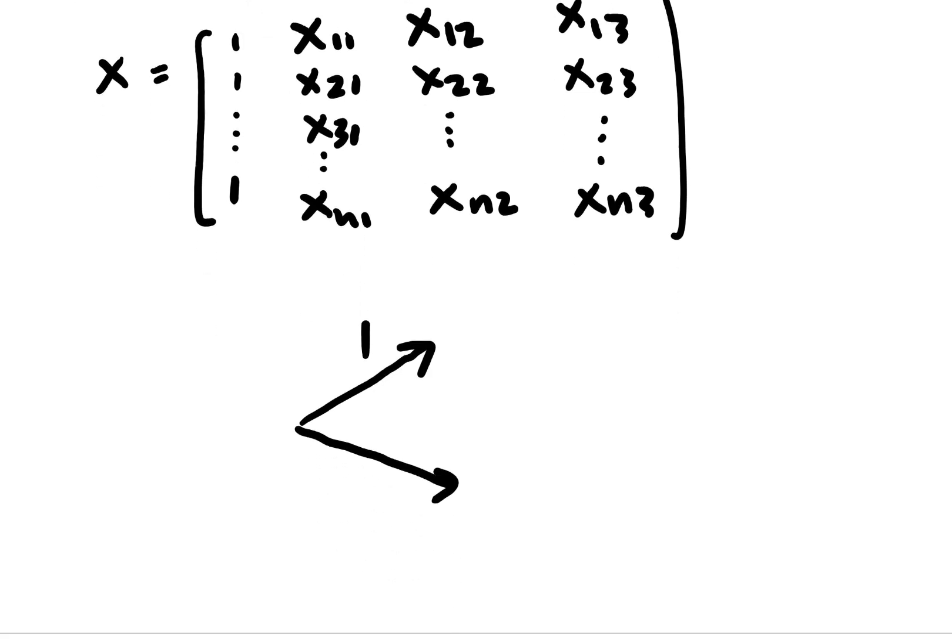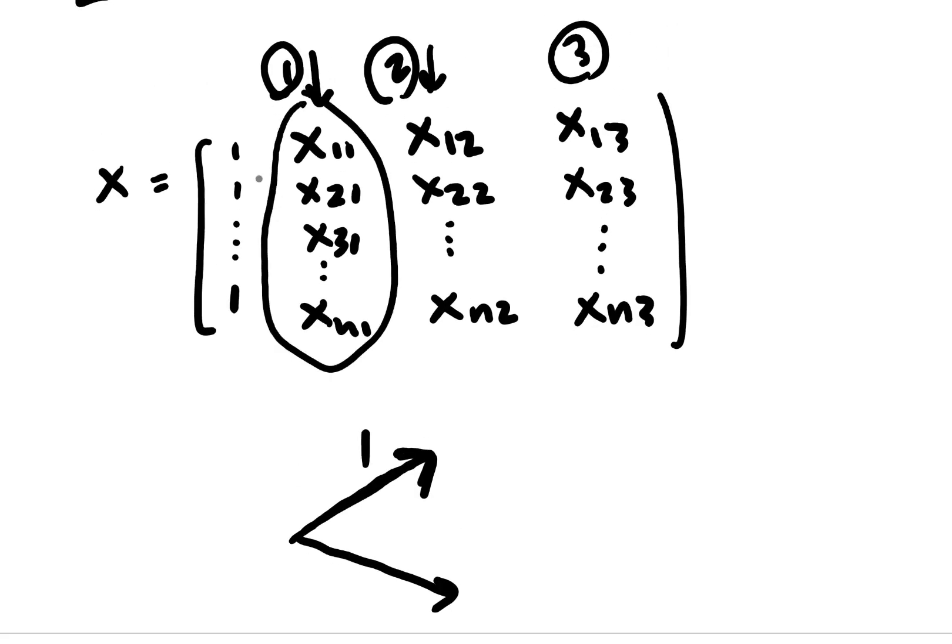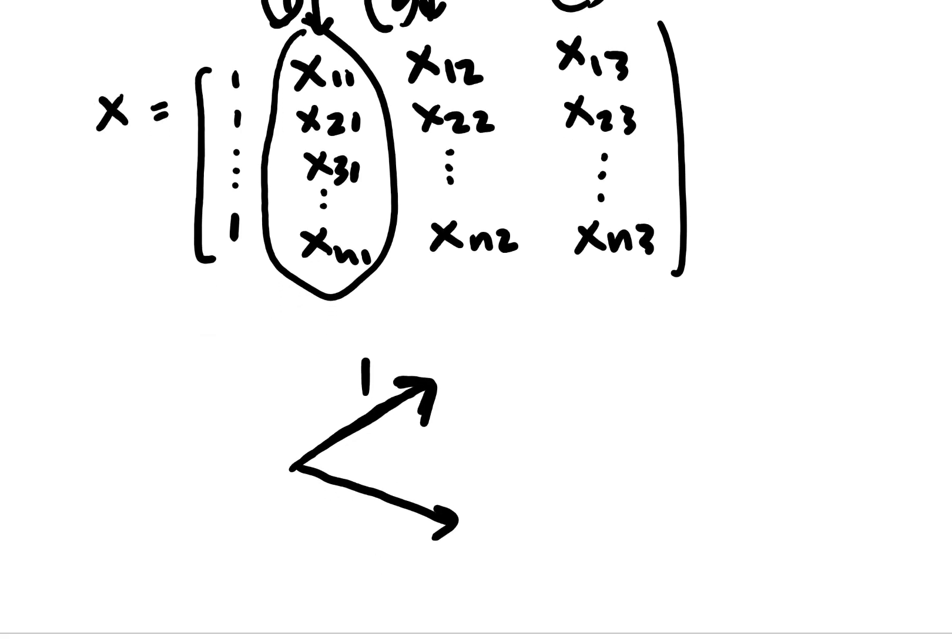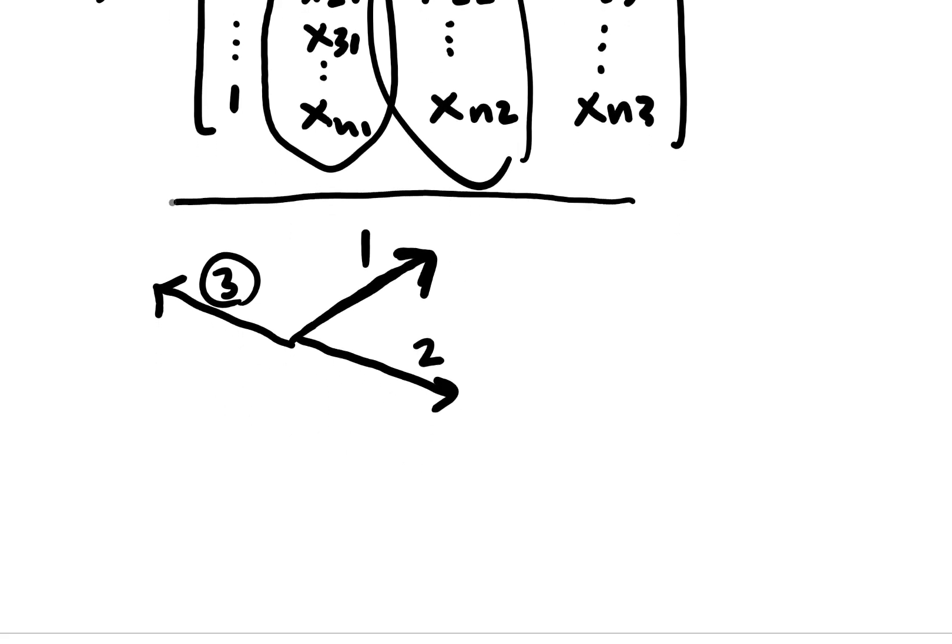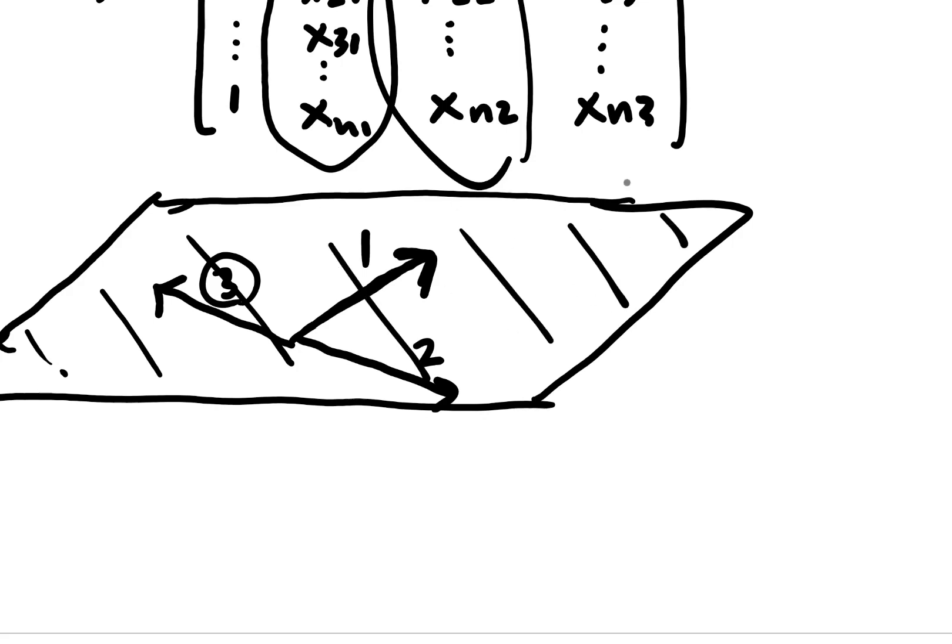So this vector here represents this vector of x values. This one represents this vector of x values. And then let's say that three is here. So what we can do is we can say that these basically represent a plane in space. So here's our plane. And so what we want to do is think of this vector space as a plane that's the column space of x.